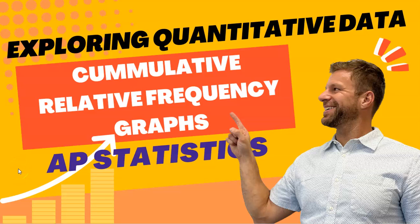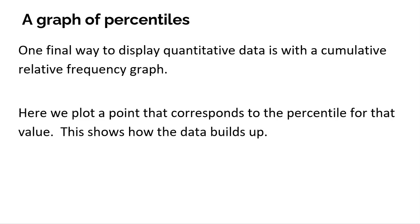Welcome to AP Statistics. In this video, we're going to talk about cumulative relative frequency graphs — long names. Some people call them ogives, but they're a really nice, pretty cool graph that you can learn a ton of information from. This is the final type of graph for quantitative data that we're going to explore.